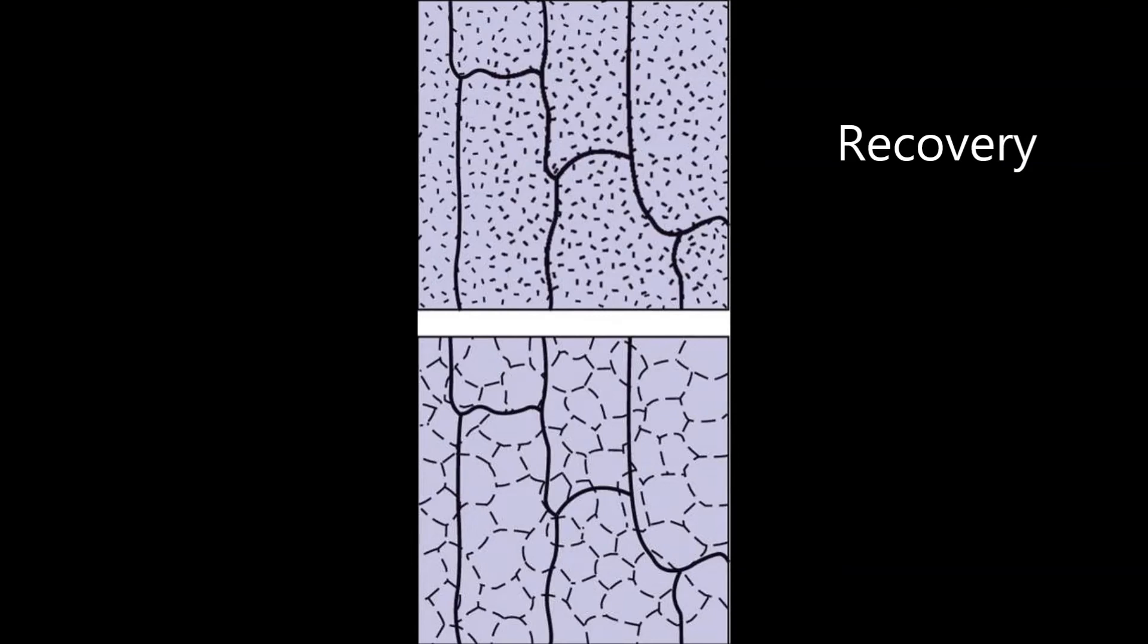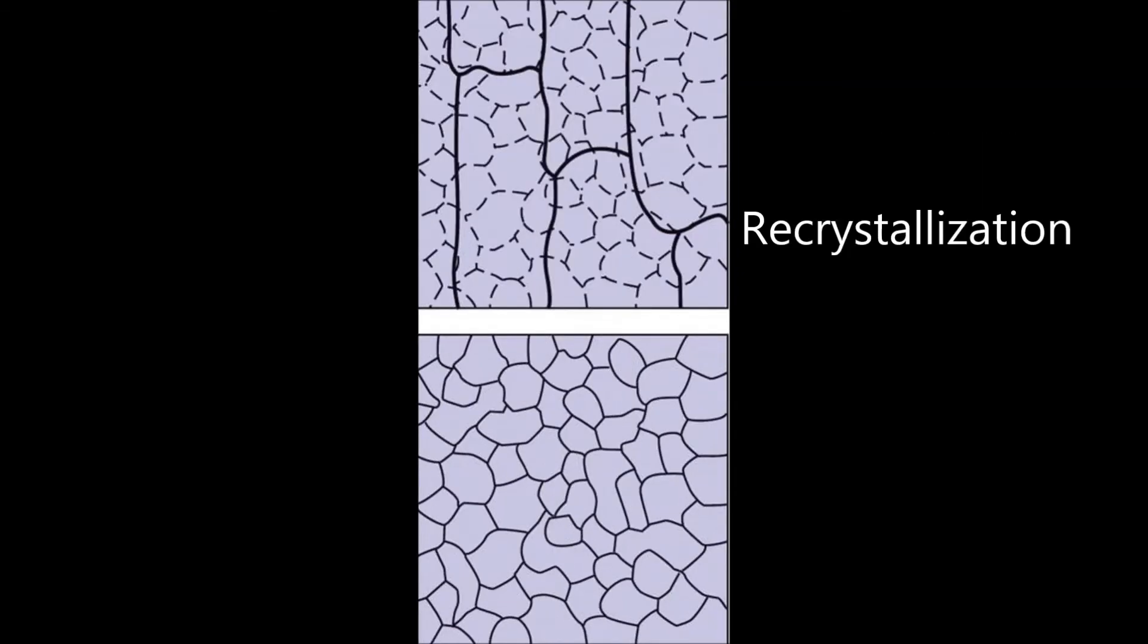During the recovery stage, the dislocations rearrange to relieve stress. There is little change in mechanical properties during this stage. During recrystallization, many small grains form within each of the old grains. The new grains have few dislocations, but many grain boundaries.